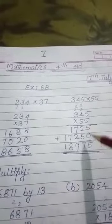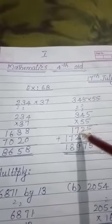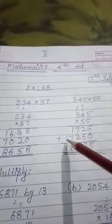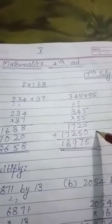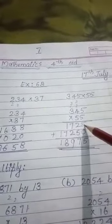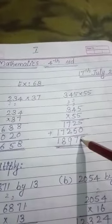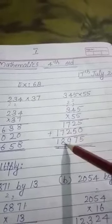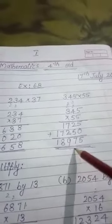Then next step, you have to add these two numbers: 1725 plus 17250. When you add: 5 plus 0 is 5, 2 plus 5 is 7, 2 plus 7 is 9, 1 plus 7 is 8, and 1. So your answer is 18975.